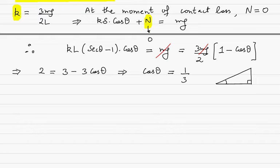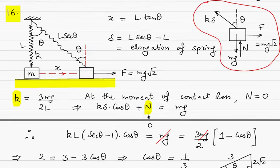With cos theta equal to 1/3, using a right triangle where the hypotenuse is 3 and adjacent side is 1, the perpendicular from Pythagoras theorem is square root of 8 equals 2 root 2. So tan theta equals 2 root 2. From the beginning till the moment of contact loss, we apply the work energy theorem on the system of the spring and the block.